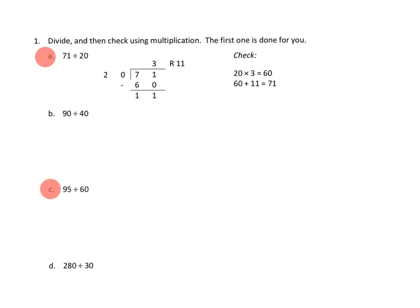They probably thought, well, one group of 20 would certainly fit, two groups, I bet they thought three groups of 20 would fit, right? Three groups of 20 would be 60. Sure, there I see it. So they've got a quotient of three, three groups of 20.